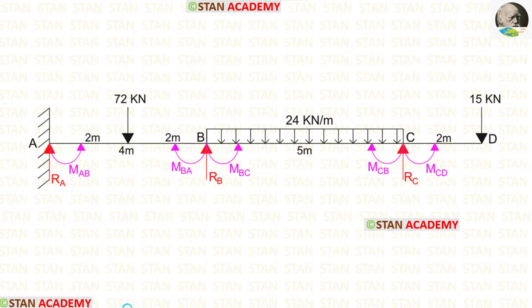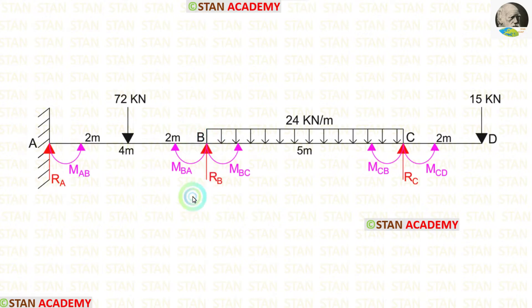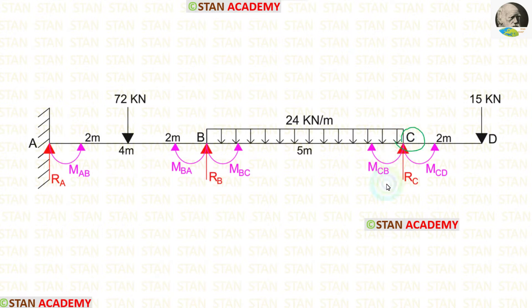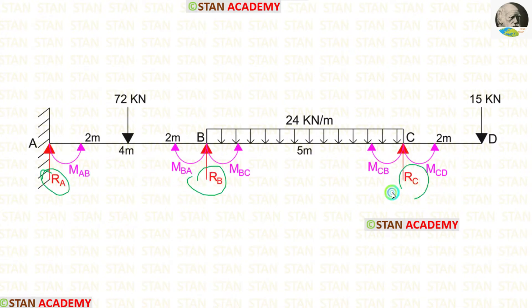In this beam, we have to find 5 moments in total. At the fixed support, there will be a moment MAB. At joint B, there are 2 moments: MBA and MBC. At joint C, there are 2 moments: MCB and MCD. So totally we have to find 5 moments. We also have to find 3 reactions: RA, RB, and RC.